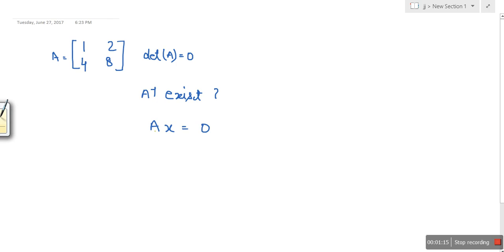So if I take minus 2, 1, if I take this X, so when you multiply this one with this, let me show you the multiplication for [1, 2; 4, 8] times [-2; 1].